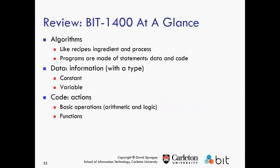We also have variables — things you could change, like int i = 3. We had variables such as integers, floating point, and doubles, which are double the size in terms of the number of bits used to store the value. We also had long longs, which were twice as long as an integer, and shorts, which are half the length of an integer — so we go from 16 bits for a short to 32 bits for an integer, up to 64 bits for a long long.